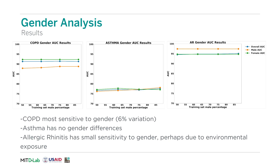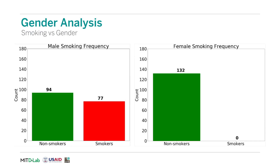Looking at our results, we also noticed that our algorithm is more accurate at predicting COPD in women than men. Exploring the results further, we look at other variables and their correlation with gender. In our dataset, we found that smoking heavily correlated with gender: 55% of men reported that they were non-smokers, whereas 100% of women reported that they were non-smokers. As a result, the population of women was more homogenous, allowing for higher predictive accuracy.